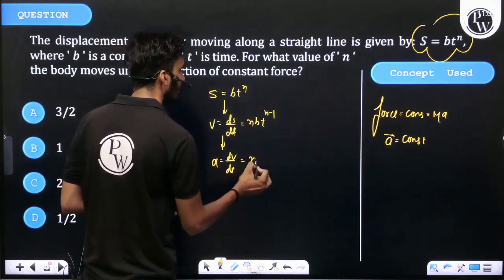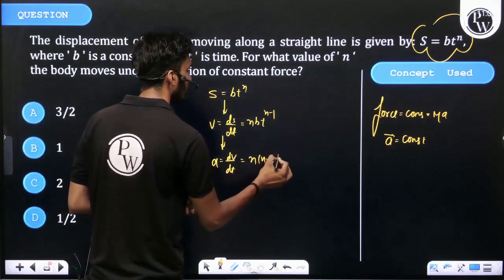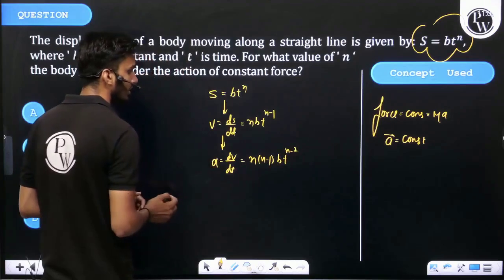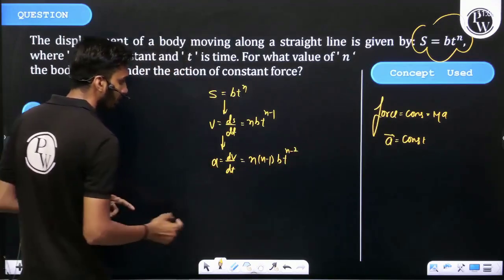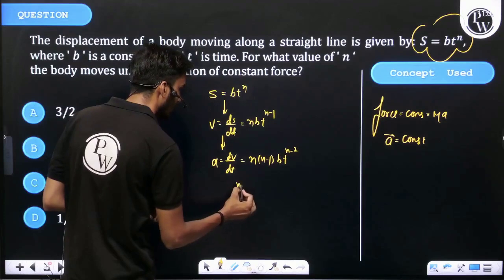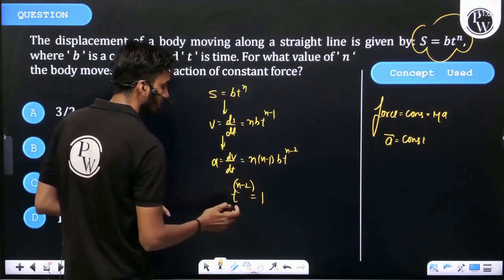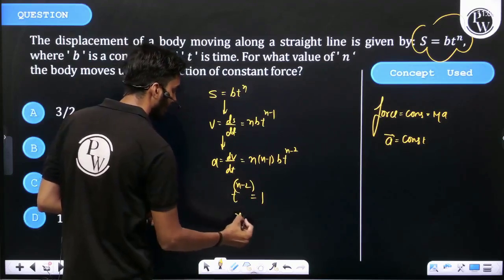That is n(n-1)bt^(n-2), and it's constant, meaning it doesn't depend upon time. Then t^(n-2) equals 1, so n-2 equals 0.